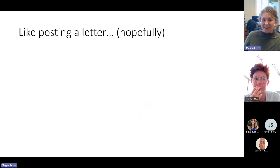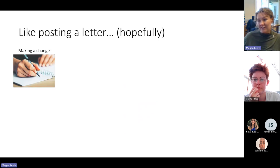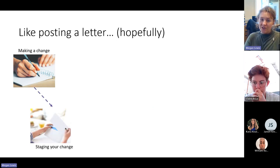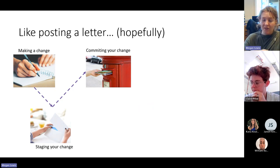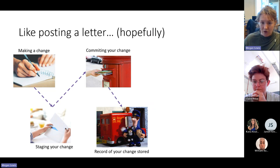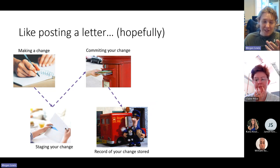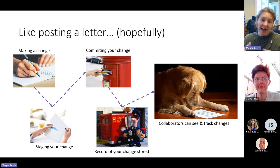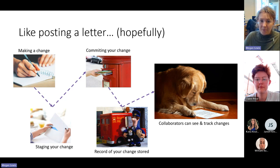One way to think about the general GitHub process is like posting a letter. You've made your change in your document — that's you writing a letter. Then you've staged your change — that's like putting the letter in the envelope. Then you commit that change, which is like putting the letter in the post box. GitHub keeps a record of your data and the different changes you've made, and then your collaborators can see those changes too.